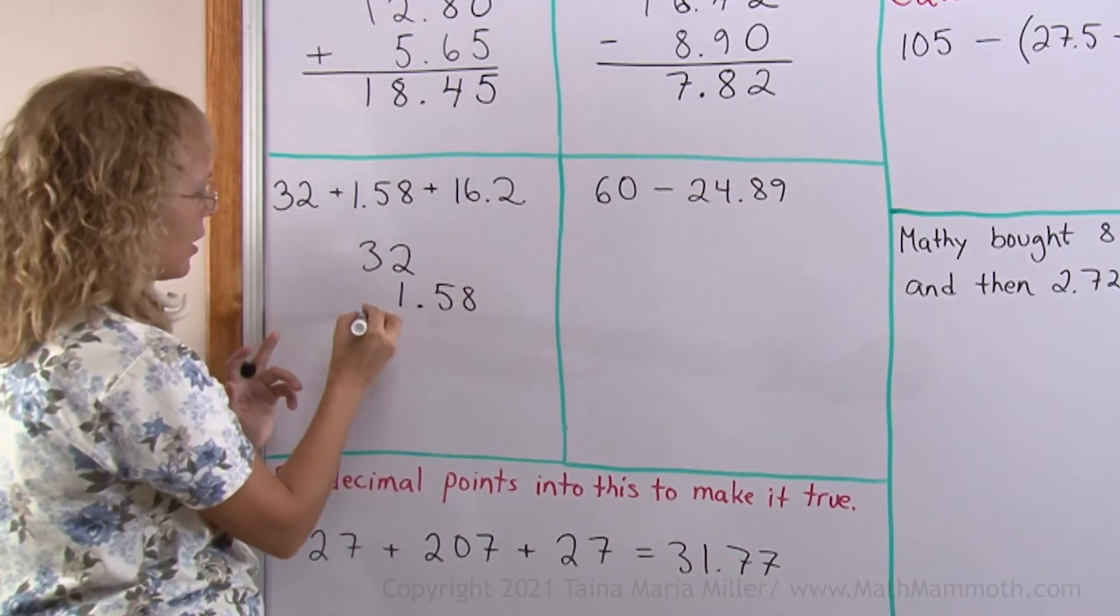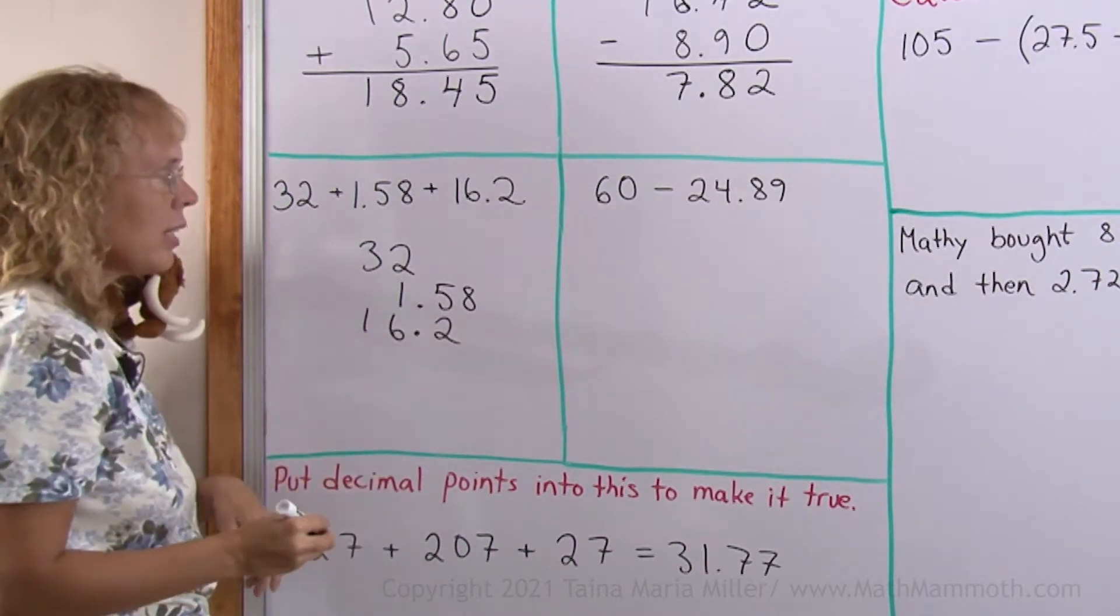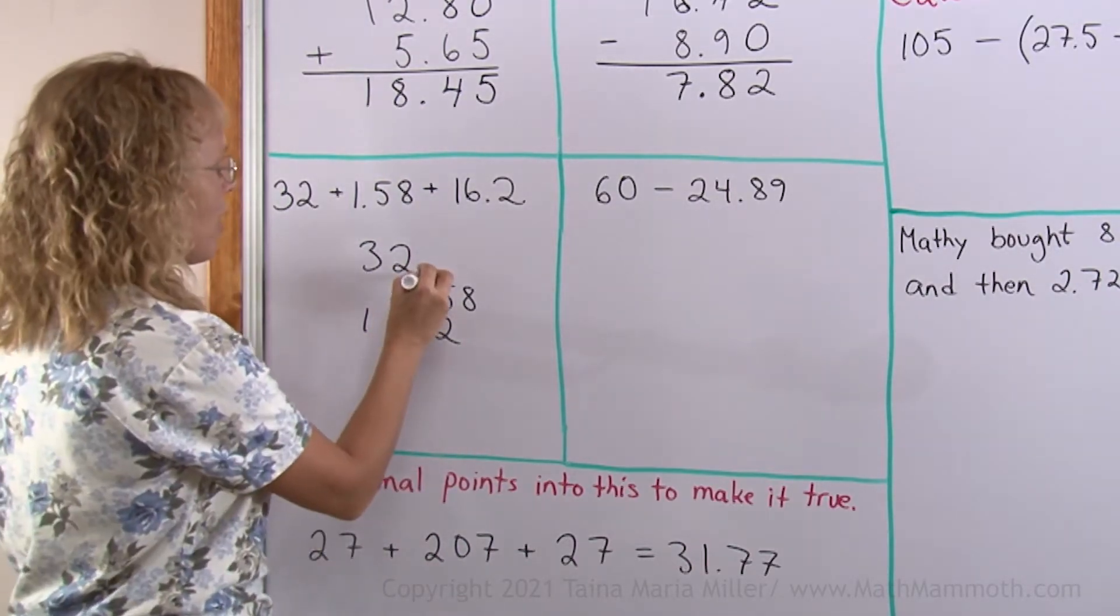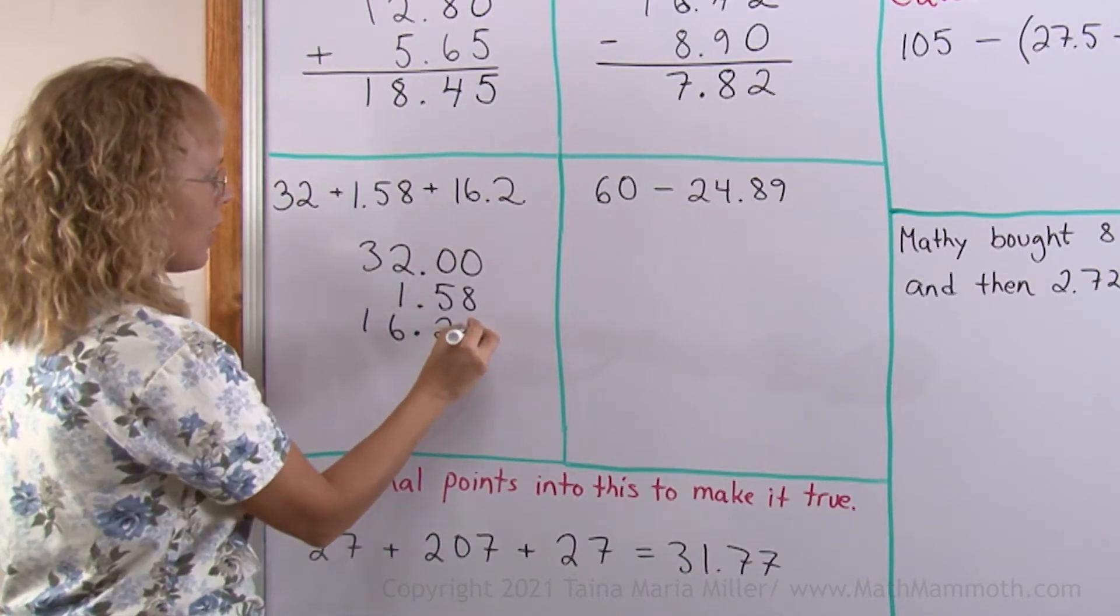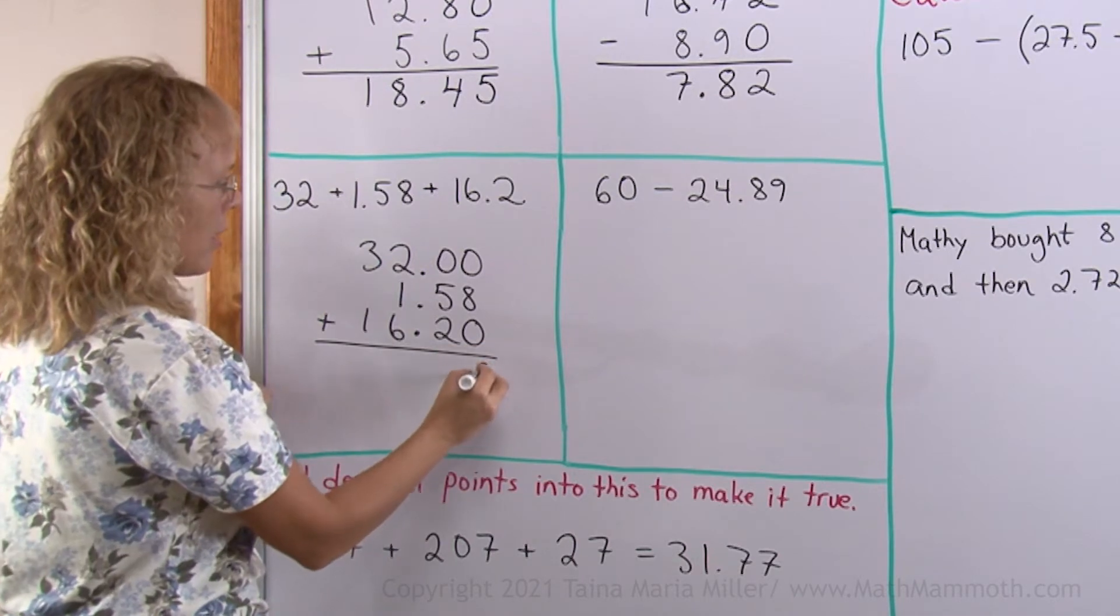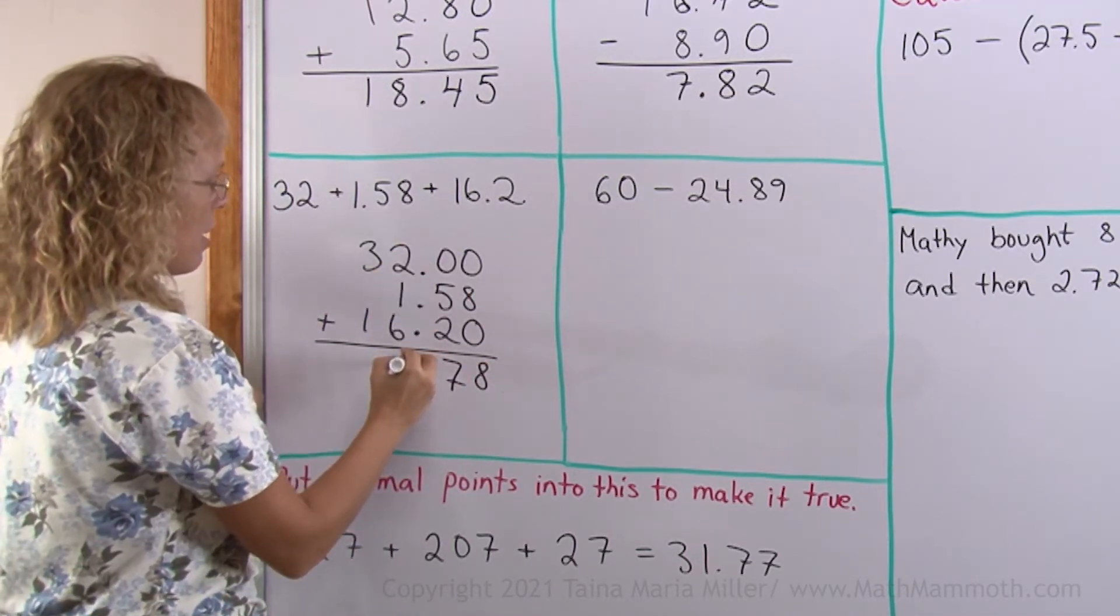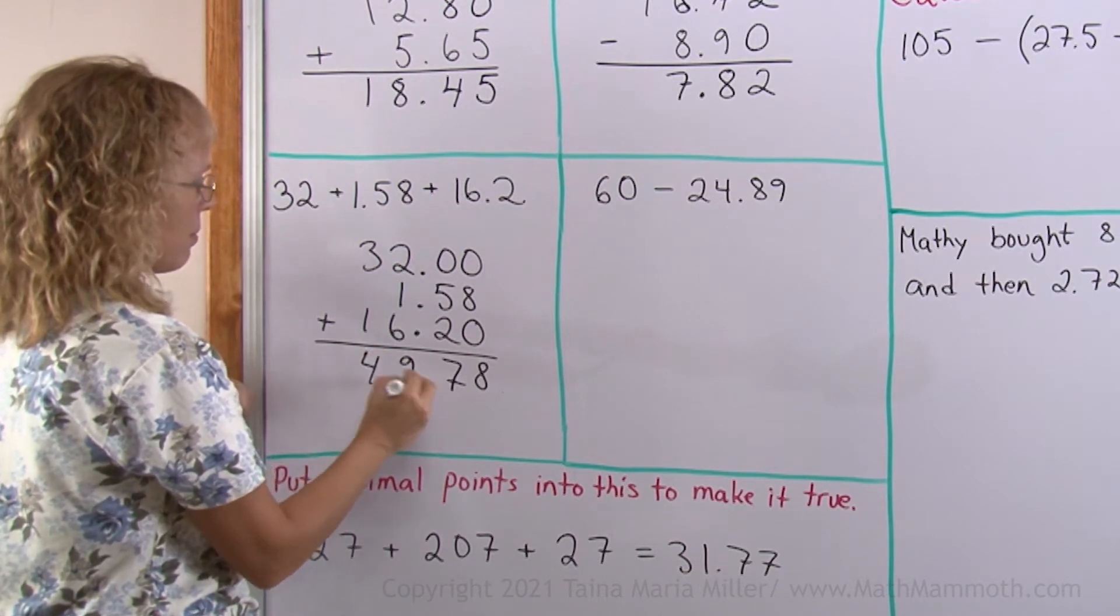Sixteen point two is easy now. Sixteen here, point and two. Thirty-two doesn't have any decimal digits so we can now add the zeros there. Add a zero here too. Then add eight and seven and here we have nine and four. Very easy.